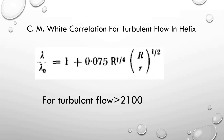The next is the CM White correlation for turbulent flow in a helix. Here, lambda-naught is the friction factor for the straight pipe and lambda is the friction factor for the coil. The term r over R, raised to the power 1 over 2, relates to the helical coil geometry. It appears to be r over R, and it is indeed r over R. The application range is also specified.